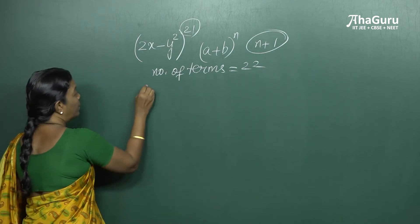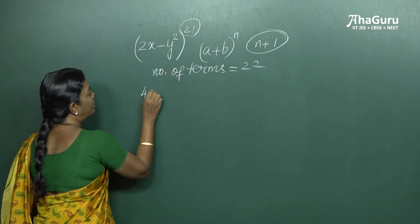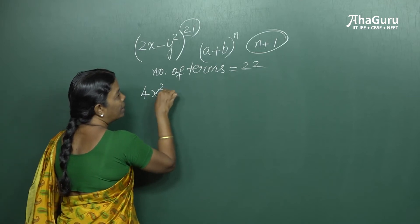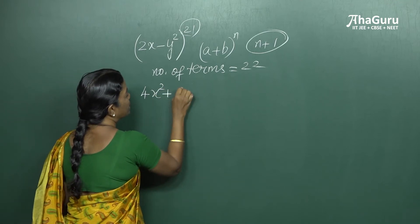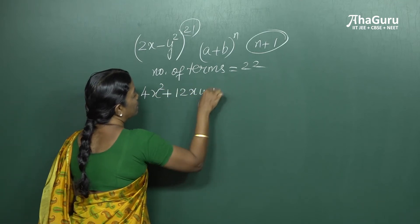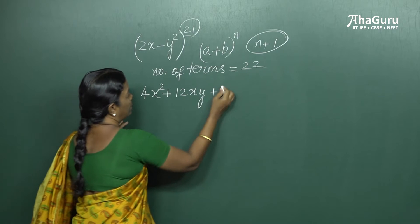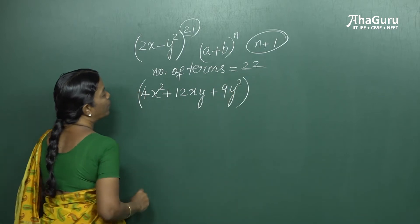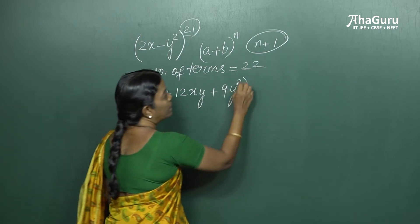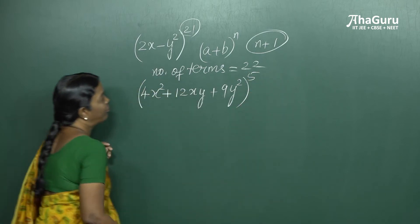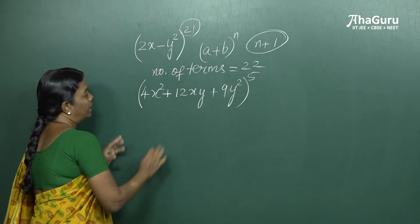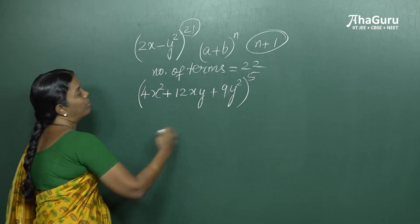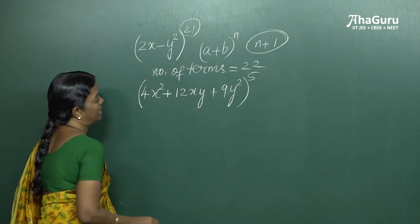We'll now consider one more example: 4x² plus 9y² plus 12xy, raised to the power 5. The question is to find out what is the number of terms in this expansion.